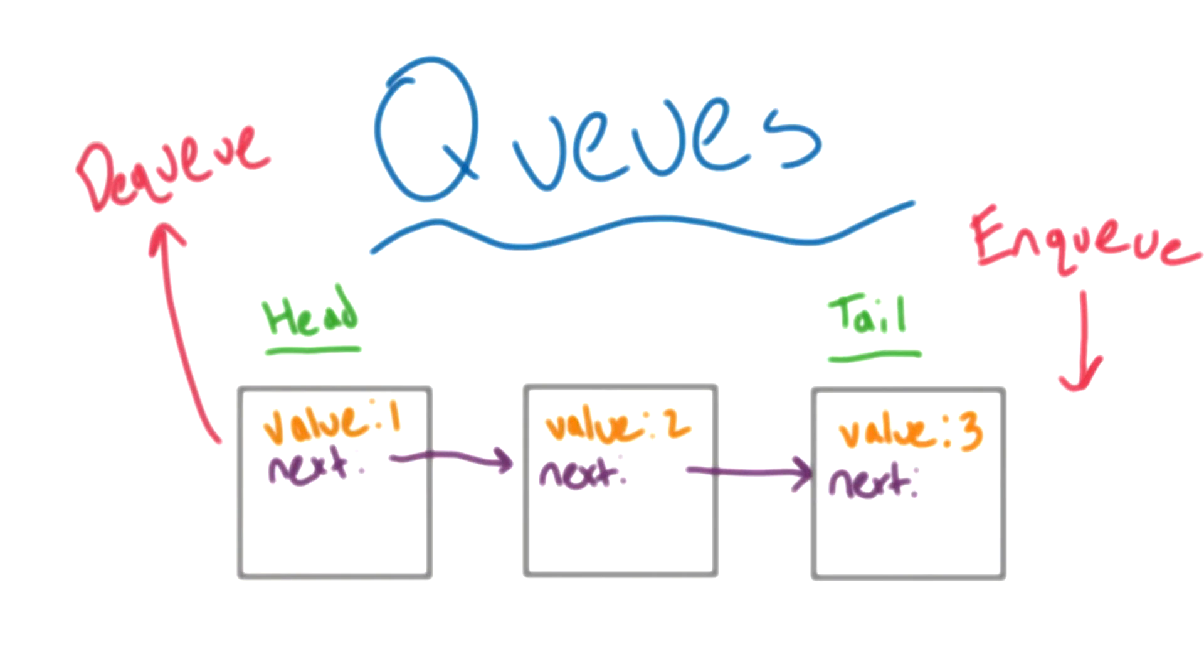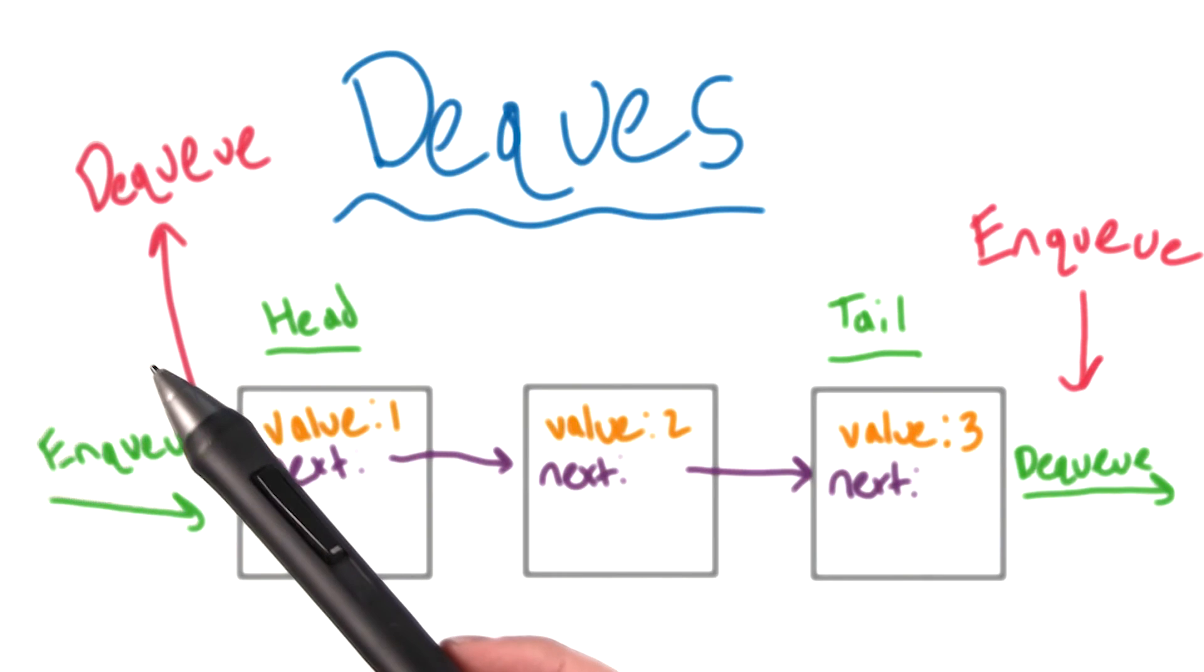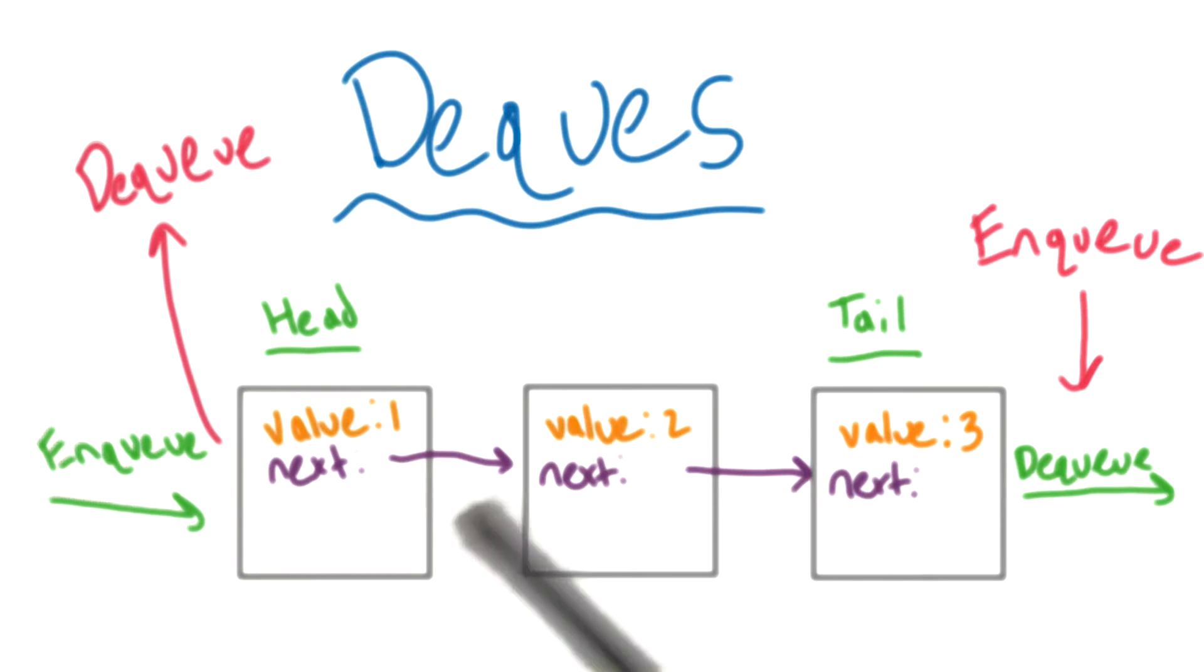There are actually two special types of queues that show up a lot. A deck, or double-ended queue, is a queue that goes both ways. You can enqueue or dequeue from either end. If you think about it, a deck is kind of a generalized version of both stacks and queues, since you could represent either of them with it.